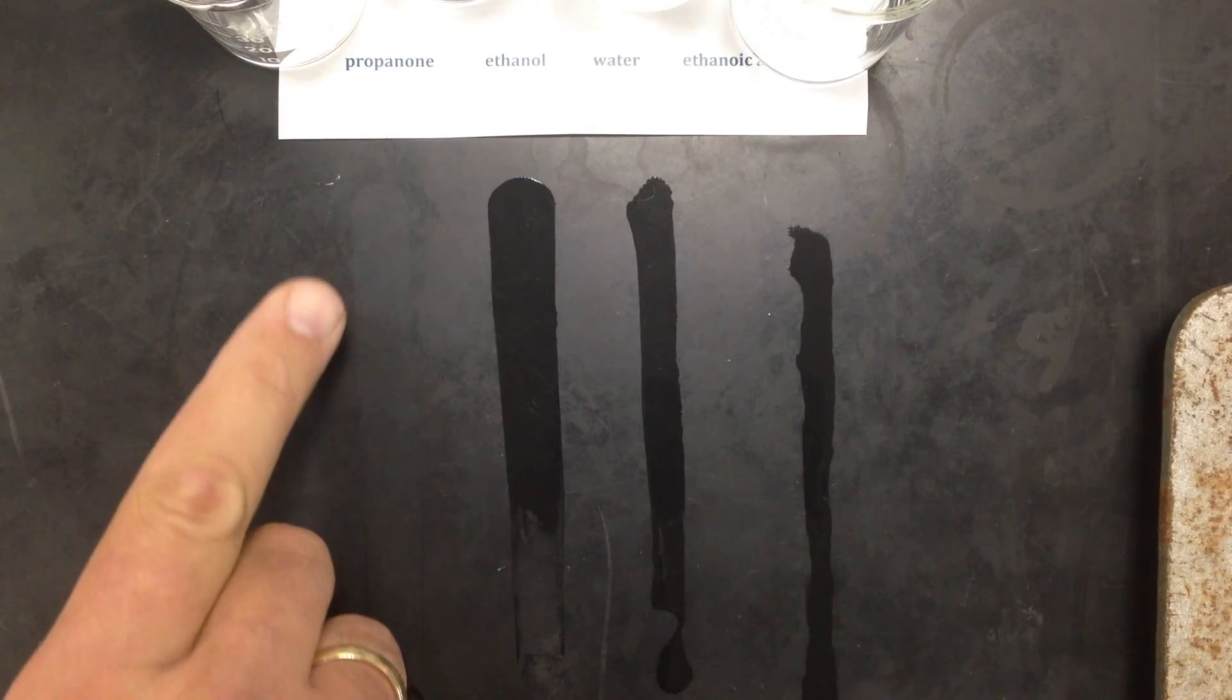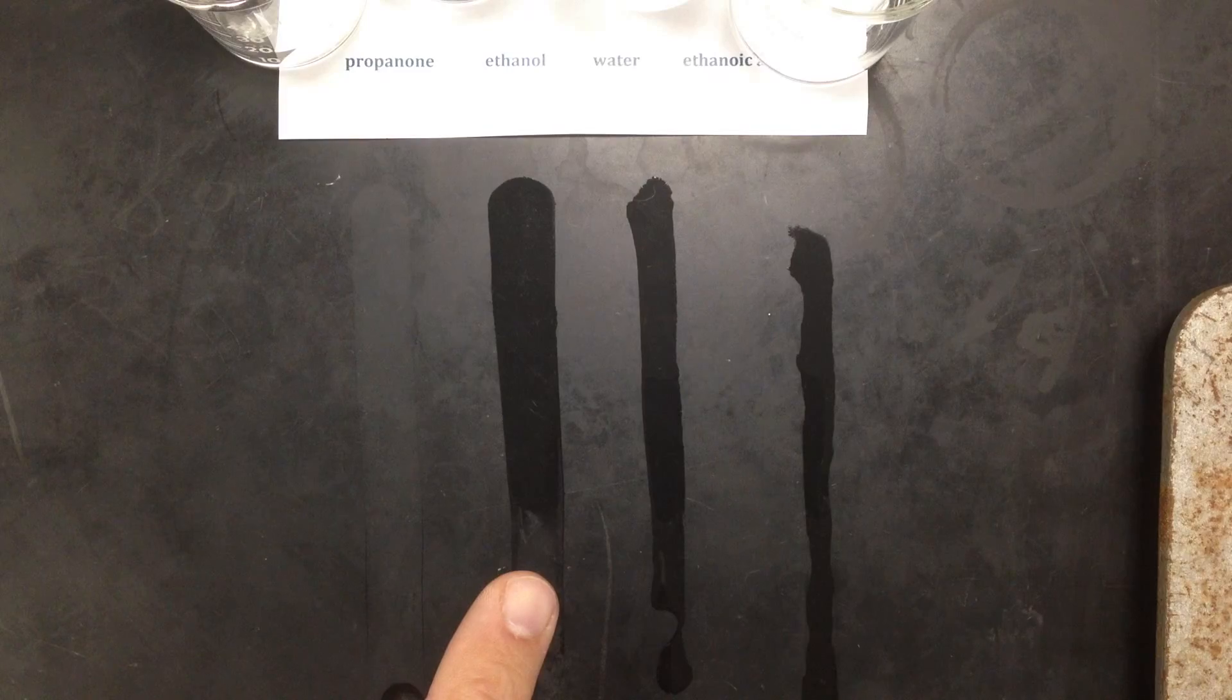So clearly the first two liquids, the propanone and now the ethanol, have the highest vapor pressure because they're escaping into the gas phase faster.